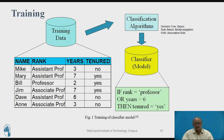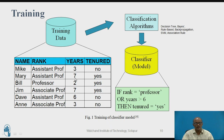Now let us look at the figure showing training of the classifier model. On the left-hand side, training data is given, which includes the name, rank of the faculty, number of years worked, and whether they are tenured — yes or no. For example, Mike is an assistant professor with three years of experience; the training dataset records his tenure as no. For Mary, Bill, and Jim, it is recorded as yes.